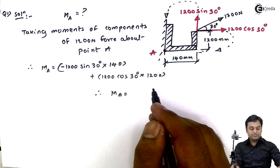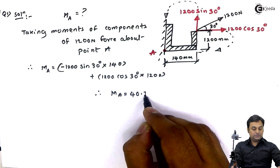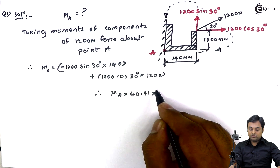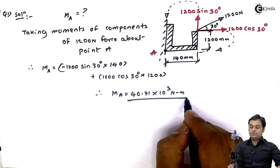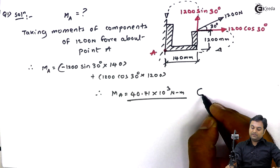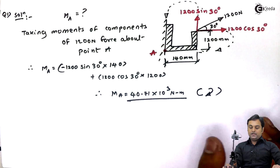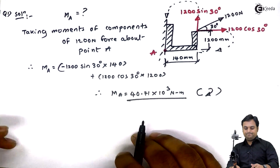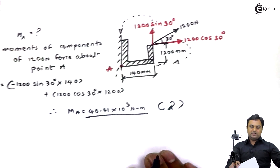Calculating all values carefully, the moment comes out to 40.71 × 10³ Newton millimeters. Since the answer is positive, the total effect is in the clockwise direction, and with this the question is solved. Here only the moment of a force was asked.